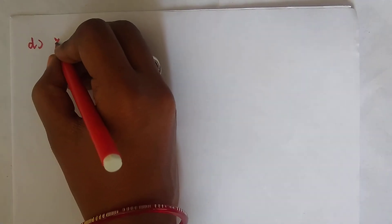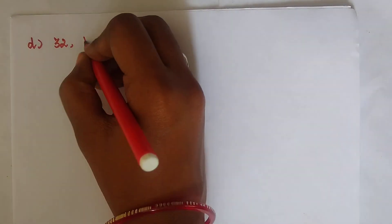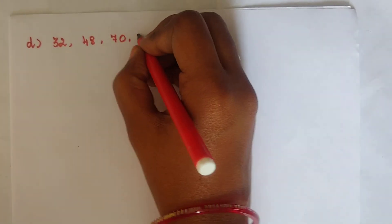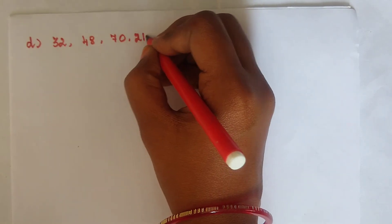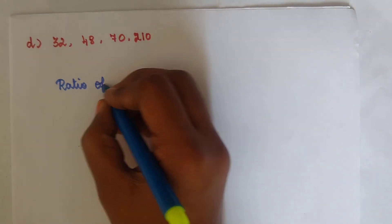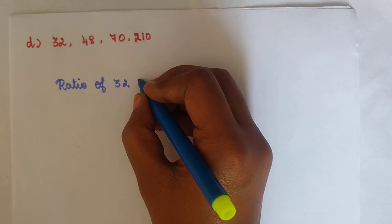Next, we move to subdivision D: 32, 48, 70, and 210. Here also we have to find the proportion. First step, we have to find the ratio of two pairs. First, we find the ratio of 32 and 48.